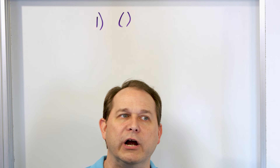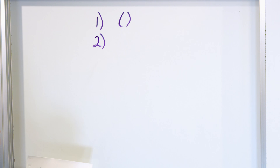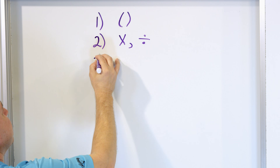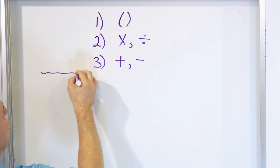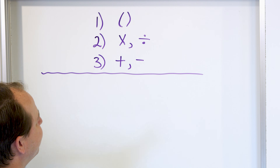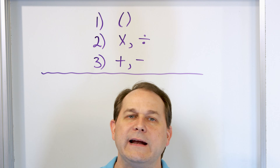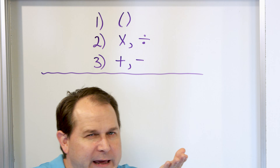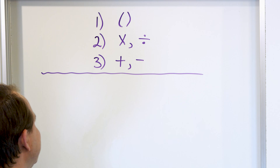That is why we did the last lessons on dealing with parentheses in math. After you've conquered that, the very next thing you do — setting aside exponents for now — is you do multiplication and division. Then the third thing you do, after multiplication and division, is you do addition and subtraction. I'm going to leave this on the board throughout this lesson. Multiplication and division are at the same level, and addition and subtraction are below that, but they are also at the same level.